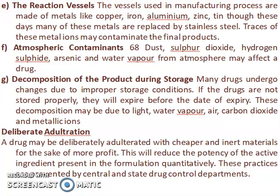Atmospheric contaminants: dust, sulfur dioxide, hydrogen sulfide, arsenic, and water vapor from the atmosphere may affect a drug. Decomposition of product during storage: many drugs undergo changes due to improper storage conditions. If drugs are not stored properly, they will expire before the date of expiry. This decomposition may be due to light, water vapor, air, carbon dioxide, and metallic ions.